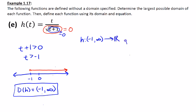given by h of t is equal to t divided by the square root of t plus one.